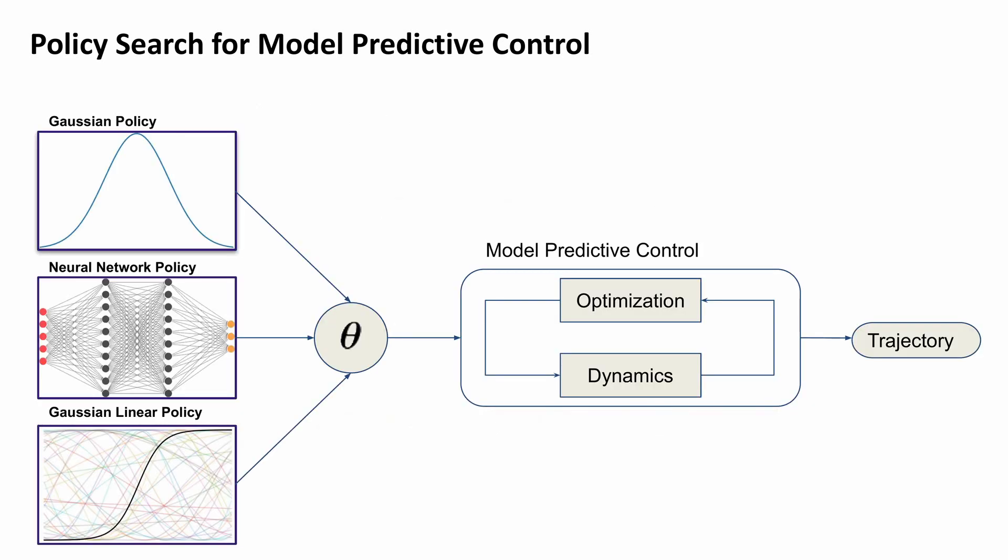Our framework allows learning three different high-level policies, including Gaussian policies, Gaussian linear policies, and neural network policies.